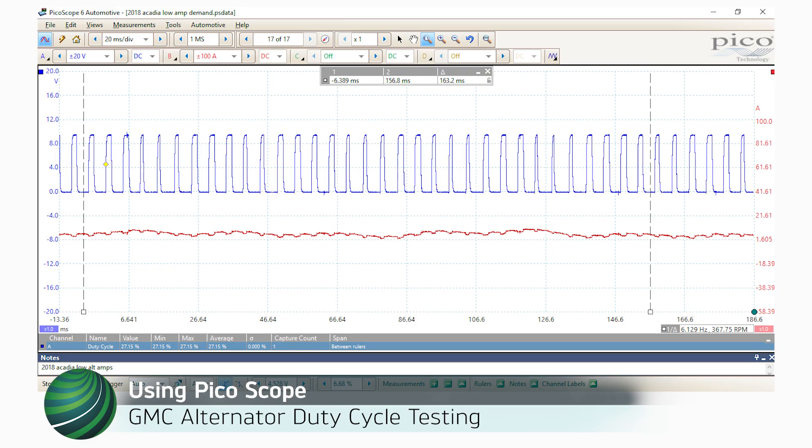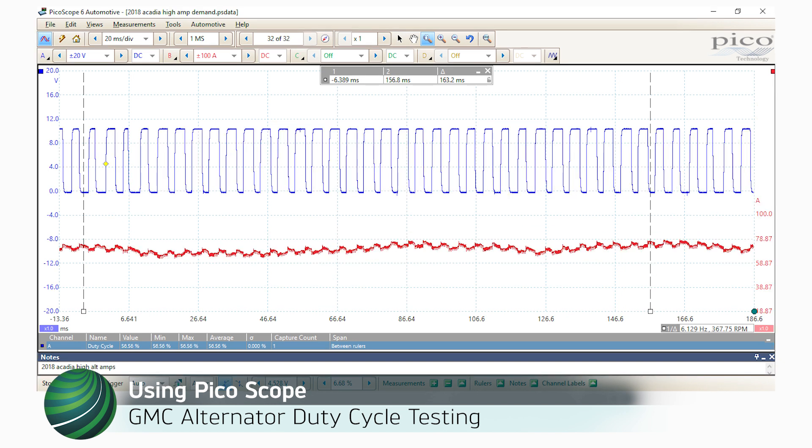In this video, we'll show you how to acquire and interpret the alternator duty cycle control circuit on GMC vehicles. In this example, a 2018 GMC Acadia is used. The information shown is for a normally working charging system.